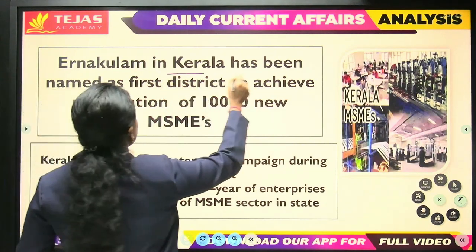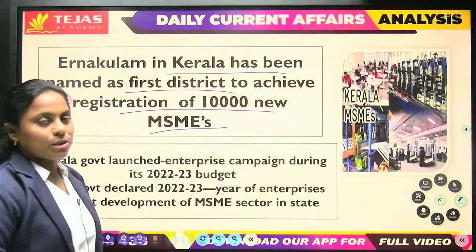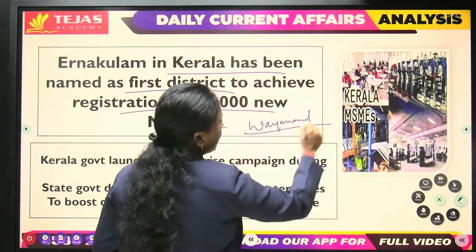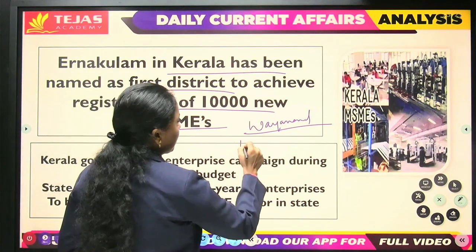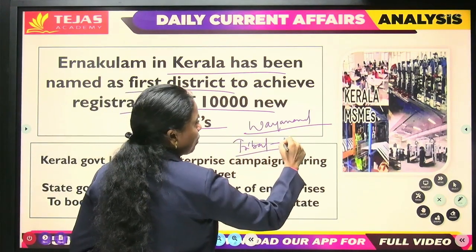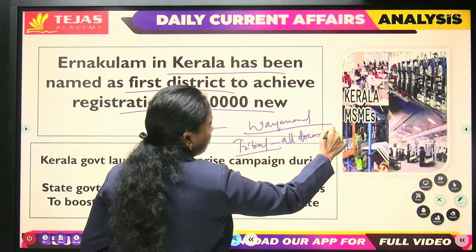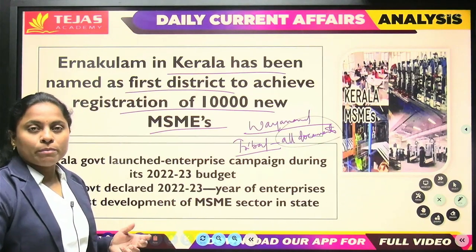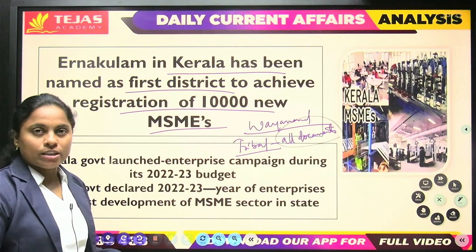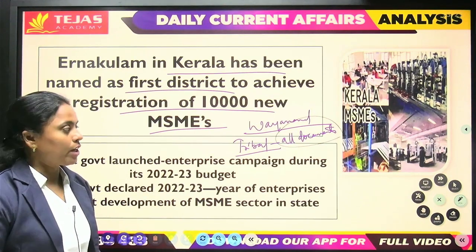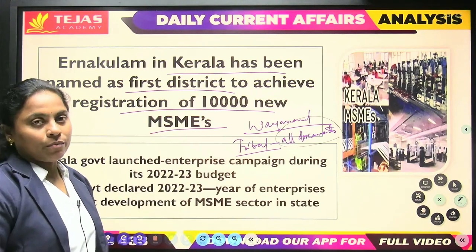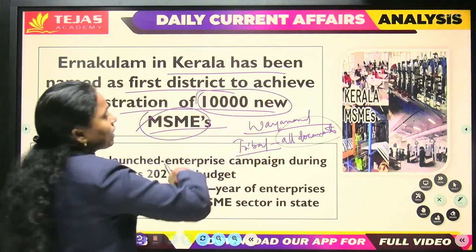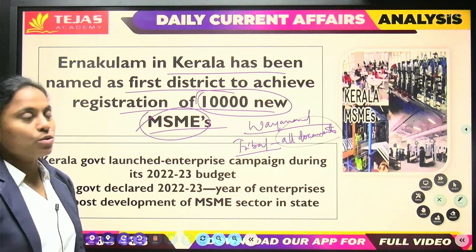Kerala news: Ernakulam district of Kerala has been named as the first district to achieve the registration of 10,000 micro, small, and medium enterprises. The Wayanad district of Kerala is also in the news — the tribal people of that district now have all the documents needed by the government, such as Aadhaar, which are necessary for them to access government facilities and benefits.